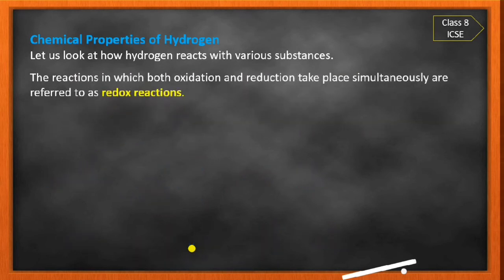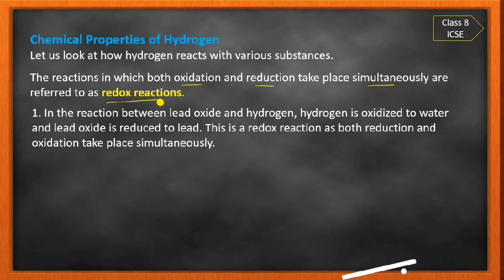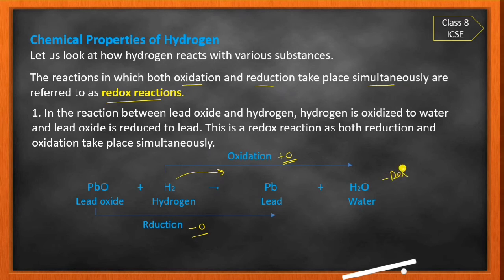If both oxidation and reduction take place simultaneously in the same reaction, it is called a redox reaction. For example: in the reaction between lead oxide and hydrogen, hydrogen is oxidized to water (addition of oxygen) while lead oxide is reduced to lead (removal of oxygen) — both happen simultaneously, so this is a redox reaction.